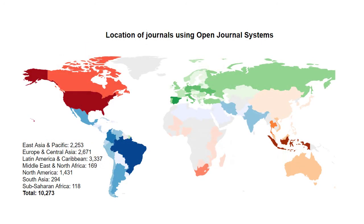As of 2016, over 10,000 journals from over 100 countries now use OJS for publishing, almost all of which are open access. OJS has been translated into multiple languages, and many OJS journals are hosted at academic libraries.